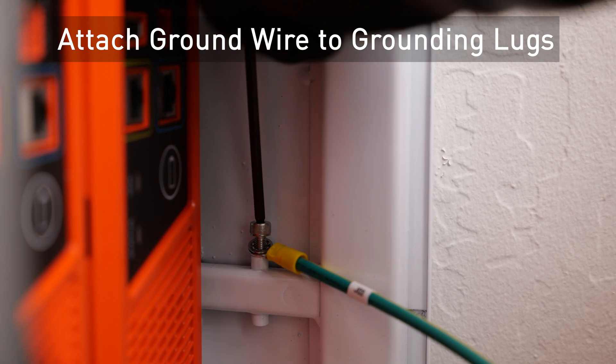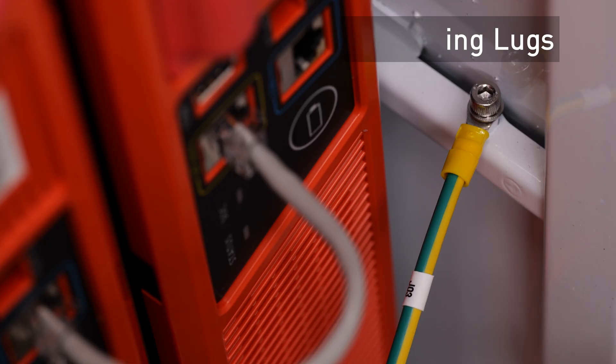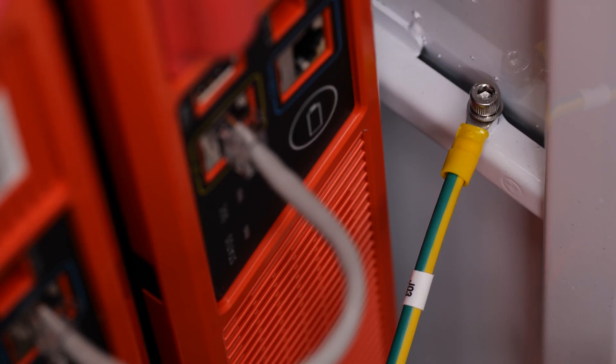Attach the ground wire to the grounding lugs inside the cabinet. The other end of the ground wire will terminate in the inverter grounding lugs.